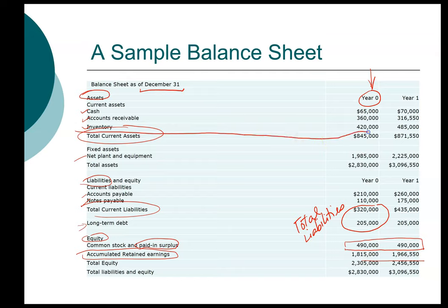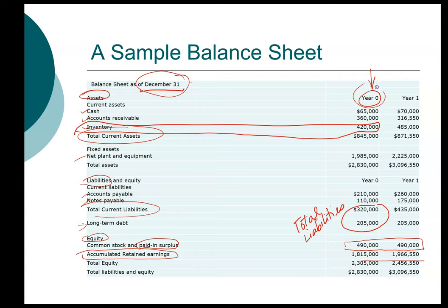Let's take a single item — inventory. The inventory for the firm on December 31st in year zero is $420,000. That means on that day, after the firm is done with business, you close the door, count every single thing that the firm owned, and it totals $420,000. The next day when you open for business, if a customer comes in and buys something off the shelf, you no longer have $420,000 worth of items in your inventory. So that number is valid only on that day, only on December 31st in year zero. You can see the same thing for cash — the cash balance is only true for that day.